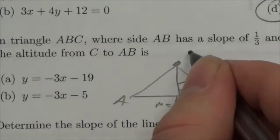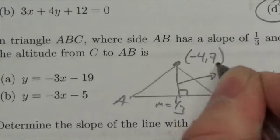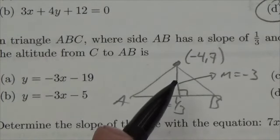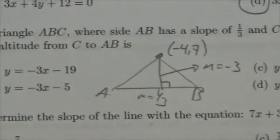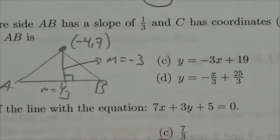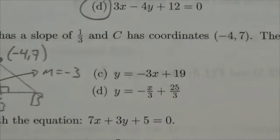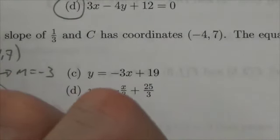And it goes through point C which is (-4, 7). So I'm looking for a line with a slope of -3 passing through the point (-4, 7). All of the answer choices are in slope-intercept form, so I'm going to create the equation in that form.